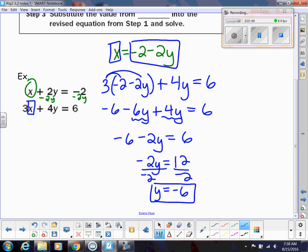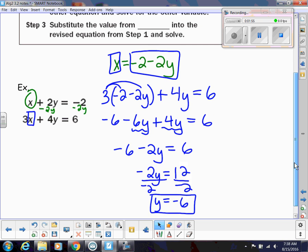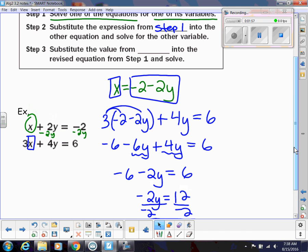Okay, so that's half of my solution. Remember, in a system, we're solving for both x and y. So now for our step three, we're going to substitute the value that we just found from step two, and we're going to put that into the revised equation from step one, and then solve.